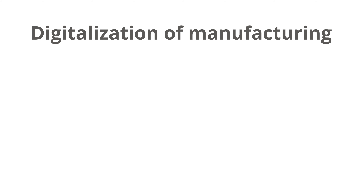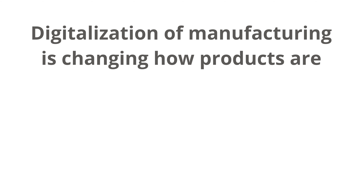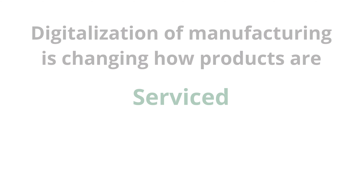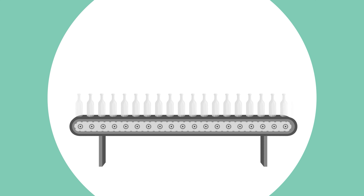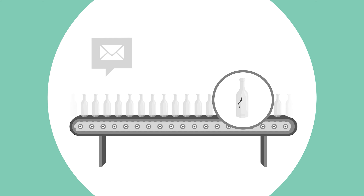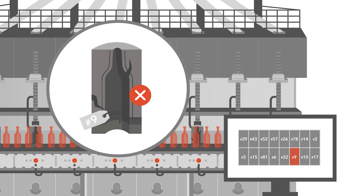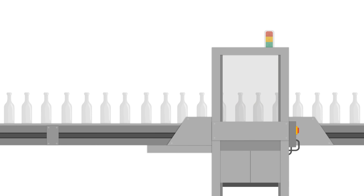The digitalization of manufacturing is changing how products are designed, fabricated, used, and serviced, just as it's transforming the operations, processes, and energy footprint of factories and supply chains. In the glass factory environment, Industry 4.0 refers to the use of sensors and software in production machinery and equipment to enable a real-time flow of information about the operational status and conditions of the equipment or the final product.